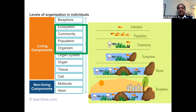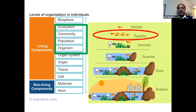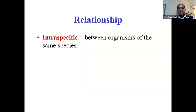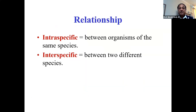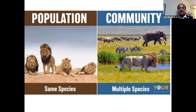This schematic shows that the individual, the population, the community, the ecosystem, biome, and biosphere are the levels of organization. We'll be dealing with the population and the species. Relationships can be of two types: intraspecific — between organisms of the same species — or interspecific — between two different species. Population means members of the same species, while community involves multiple species.